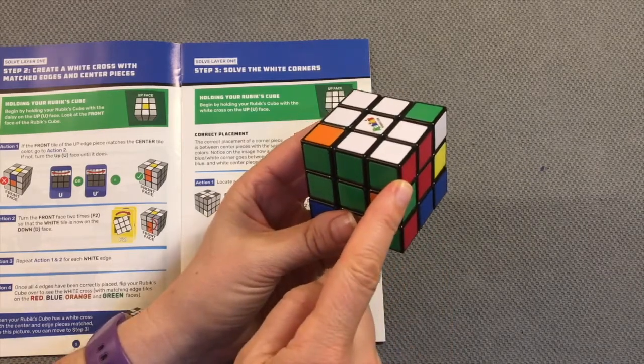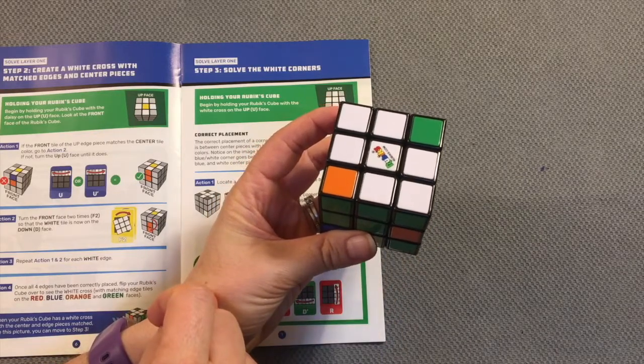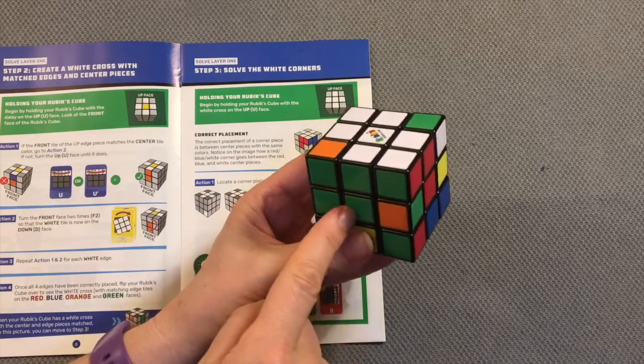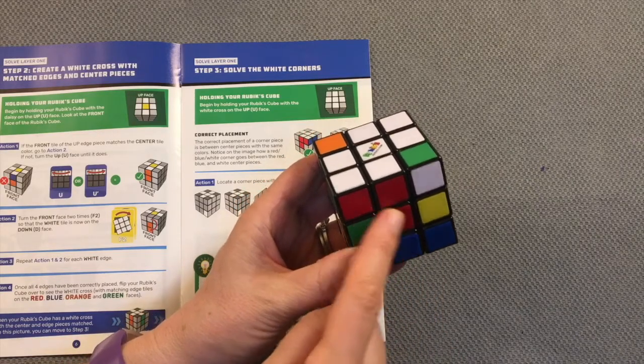That's already in the proper location. The reason I know that is because I have the white tile on top, the green tile matches the center here, the red tile here matches the center. So I know that that corner is properly placed.